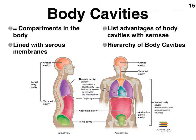The ventral body cavity consists of a cavity that sits superior to the diaphragm — your breathing muscle. Notice the spelling of diaphragm and make sure you know how to spell it. The whole body cavity that sits superior to the diaphragm we call the thoracic body cavity.